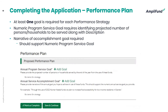Moving forward to the performance plan section, there are two proposed performance plan strategies. For these strategies, each applicant will need to identify at least one goal. There are two goal types: a numeric goal — your annual program service goal — where you provide a projected number of persons or households you plan to serve by the end of the year. There is also a corresponding service accomplishment goal that is a narrative type, where you describe how you plan to accomplish the numeric program service goal. These two goal types go hand in hand.